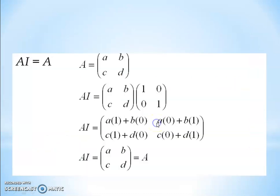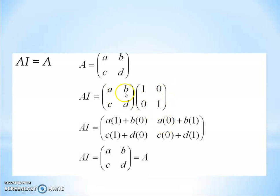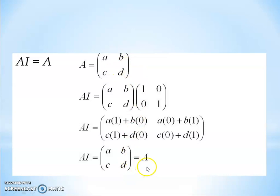Let us verify the condition A × I = A for general elements [a, b; c, d]. Row 1 × column 1: a×1 + b×0 = a. Row 1 × column 2: a×0 + b×1 = b. Row 2 × column 1: c×1 + d×0 = c. Row 2 × column 2: c×0 + d×1 = d. So we derive [a, b; c, d], which confirms that A × I = A for any element, whether positive or negative.